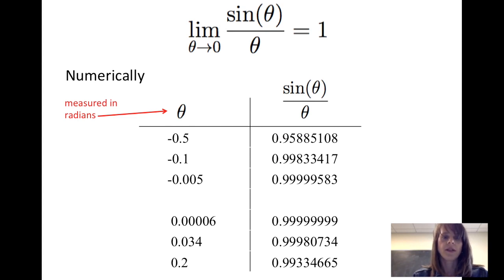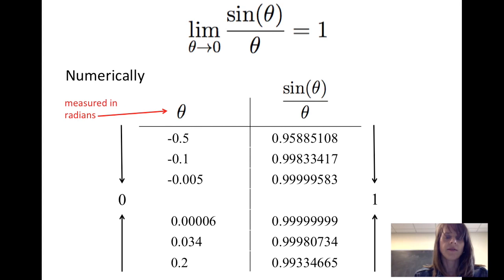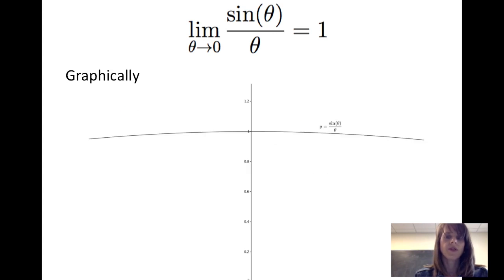If we take a look at this limit numerically, we can see that the limit is equal to 1. Noting that theta is always measured in radians, if we choose values of theta that are close to 0, both to the left and to the right of 0, we see that as theta approaches 0, sine of theta divided by theta gets close to 1. We also see this graphically — when theta is close to 0, just to the left or just to the right of the y-axis, the y-values on the graph of y equals sine of theta divided by theta are close to 1.